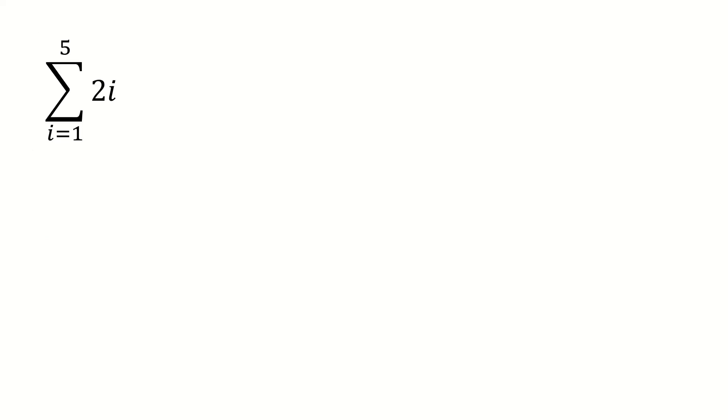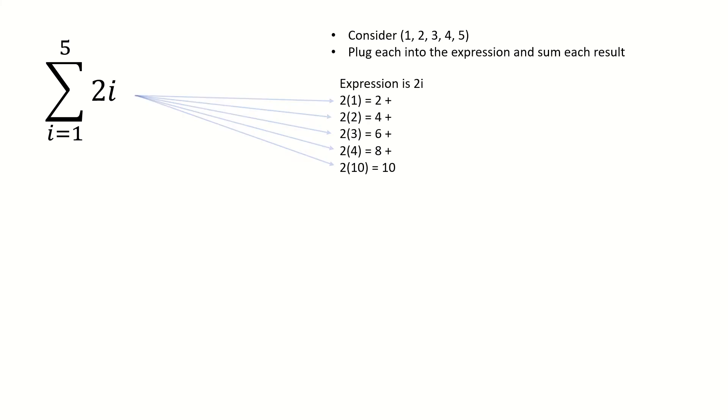Think back to the sums we're used to seeing. If we have a sum that looks like this, where our index ranges from 1 to 5, it means to consider the set of integers from 1 to 5, plug each one into the summation expression, and add up the results to get our final answer.